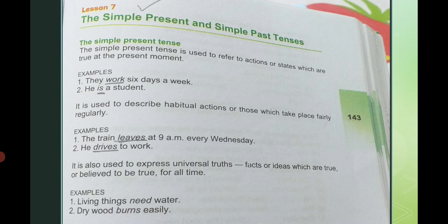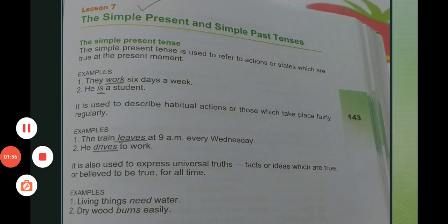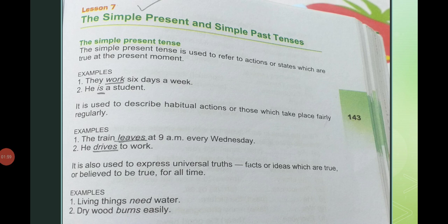Simple present tense is also used to express universal truth — اس کے علاوہ یہ universal truth کو express کرنے کے لیے بھی استعمال ہوتا ہے، جیسے سورج مغرب میں غروب ہوتا ہے۔ یہ universal truth ہے۔ اس کے علاوہ facts and ideas which are true or believed to be true for all time بھی اس سے describe کیے جاتے ہیں۔ Examples: 'Living things need water.' 'Dry wood burns easily.'